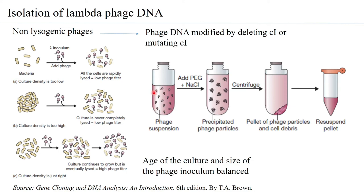Once you have a high titer, the next step is to get all the phage DNA from that volume — it is imperative to concentrate the phage DNA. If you centrifuge it, the particles will not settle down because they are very small. Therefore, polyethylene glycol (PEG) is added. PEG is a polymer that is able to adhere to the phages, forming aggregates of phages that are bulkier. When you centrifuge, you get the phages in the pellet, though cell debris from lysed bacteria also comes into the pellet. The phage particles are then resuspended and further processed.